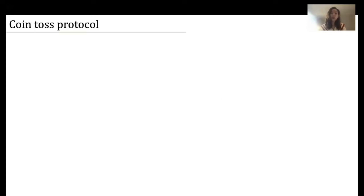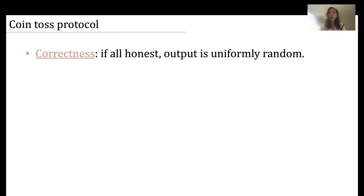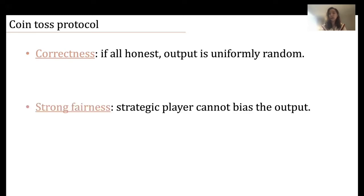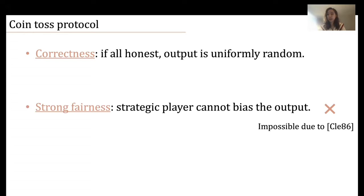Formally, in the coin toss protocol, the goal is to output a random coin that is publicly verifiable. Correctness requires that if everyone is honest, then the output should be uniformly random. The fairness notion considered in traditional literature is called strong fairness or unbiasability, which requires that a strategic player cannot bias the outputs towards either direction. Unfortunately, this is shown to be impossible by Cleve in 1986.